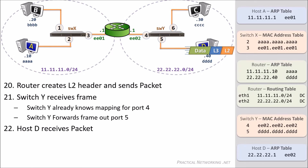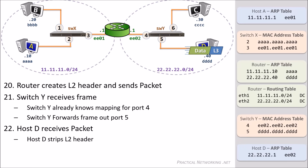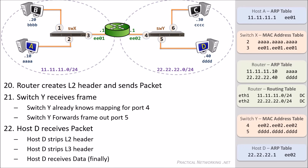This will get the frame to Host D. Host D will strip the Layer 2 header — it was used to get the packet from the router to Host D and is no longer needed. Host D will then strip the Layer 3 header — it was used to get the packet from Host A to Host D and is no longer needed. Host D will then finally receive and process the data. But this is only the halfway point. We've talked through 22 steps to get a packet from Host A to Host D. Now Host D has to respond, and the way back will be much quicker since all the tables have already been populated — the entire return will only take 8 more steps.